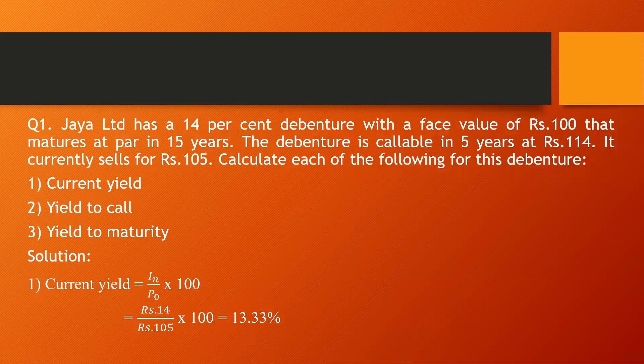In the previous class we were going through the different types of bond returns from bonds or debentures. There are different types of returns. The first one is coupon rate — the actual annual interest that you get from the bond. The interest rate specified at the time of the issue of the bond is known as the coupon interest rate, and that interest rate will be printed on the bond certificate.